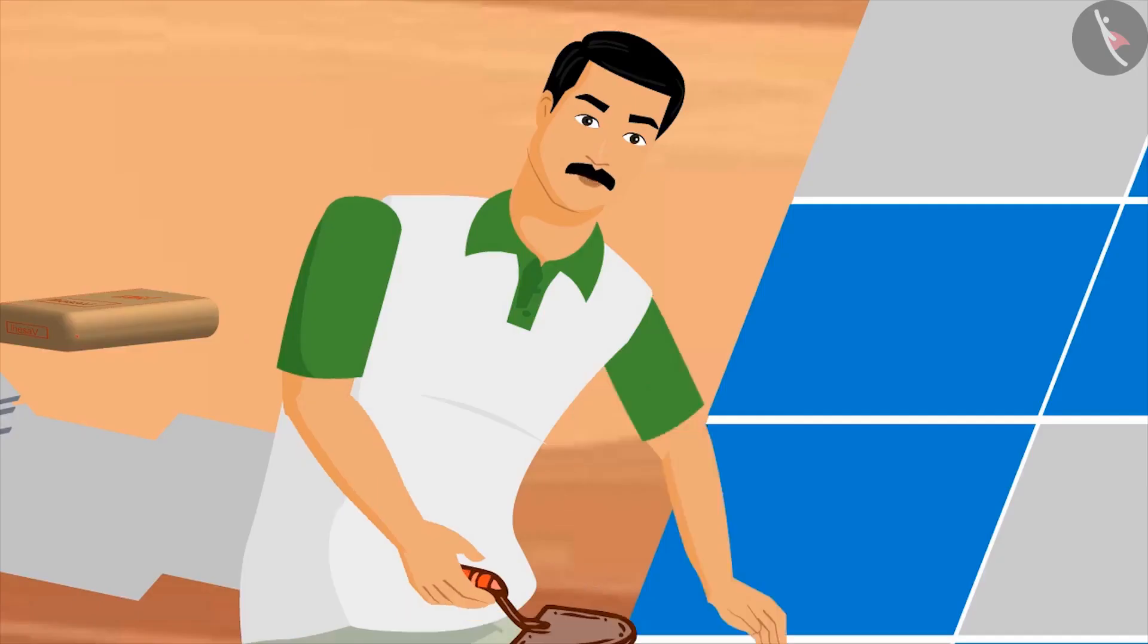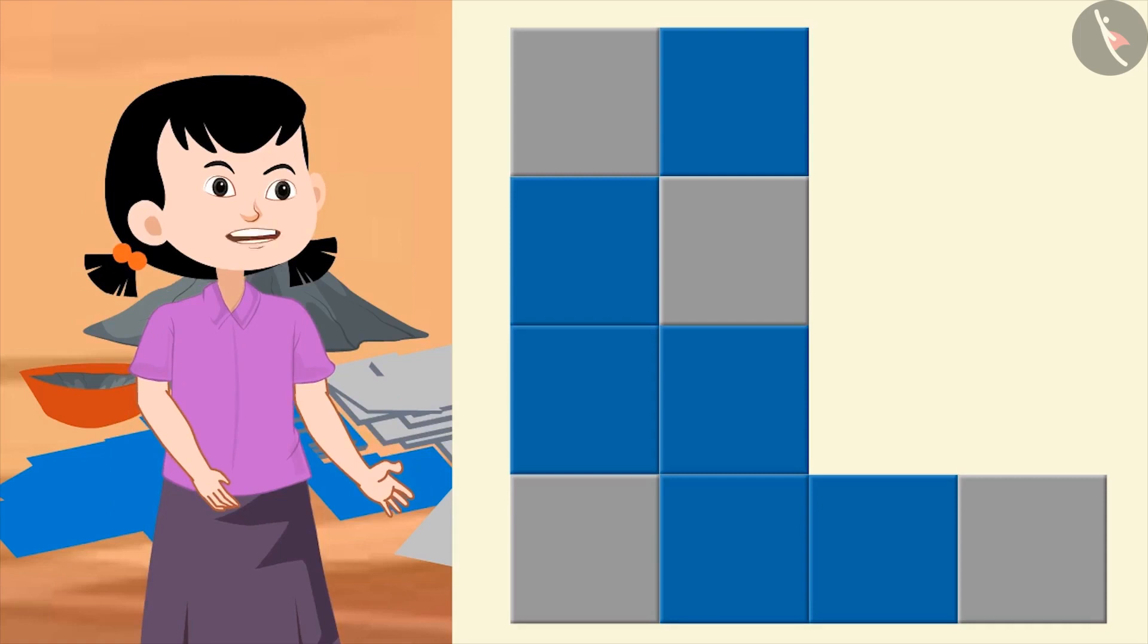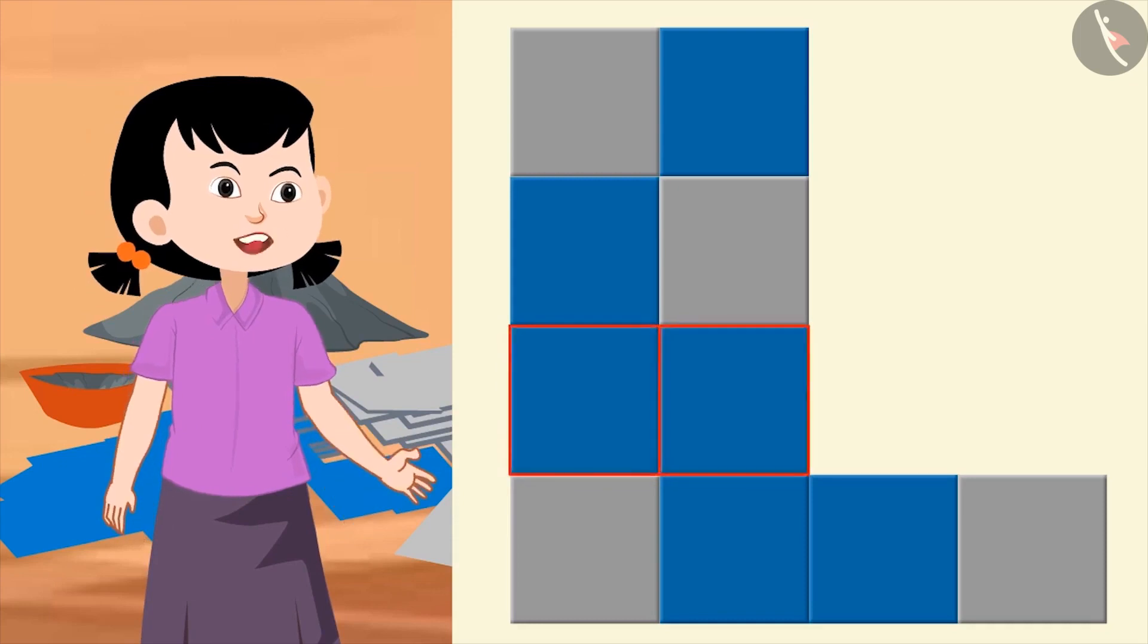Absolutely correct. Now, what colour of tile should we place here? Uncle, see in this line, we have already placed two blue tiles. That's why, we will use a grey tile now.